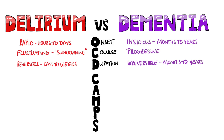The second C is for consciousness, which is usually altered in delirium. While in dementia, they can be clear, although of course this can be affected greatly in dementia too.